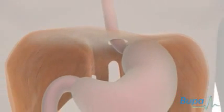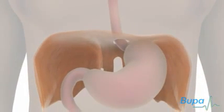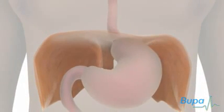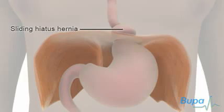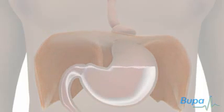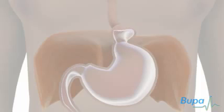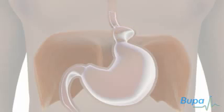In a sliding hiatus hernia, the sphincter and the top part of the stomach push upwards into the chest. A hiatus hernia can prevent the oesophageal sphincter from closing properly. If this happens, acid from the stomach can pass into the oesophagus and cause discomfort, known as heartburn.